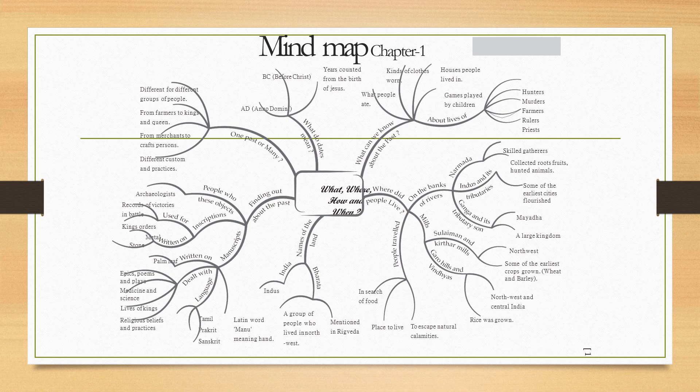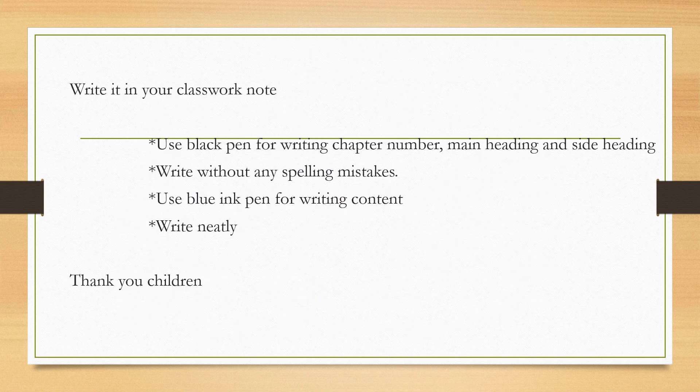This is the mind map for Chapter 1 History. It is an easy way to remember the main concepts of the lesson. Write this in your classwork notebook. Use black pen for writing the chapter number, main heading, and side heading. Write without any spelling mistakes. Use blue ink pen for writing content. Write neatly. Thank you children.